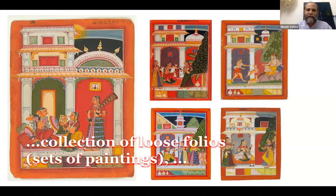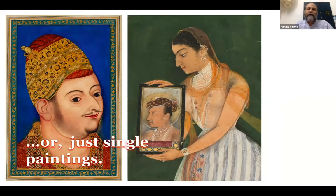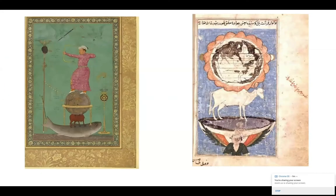Here there are some Ragmala paintings from Sirohi. And lastly, they could just be single pictures — pretty pictures that were made. Here you will get to look at a very early, 12th century picture on the right, which shows a similar bull and the earth and a fish holding it in place.